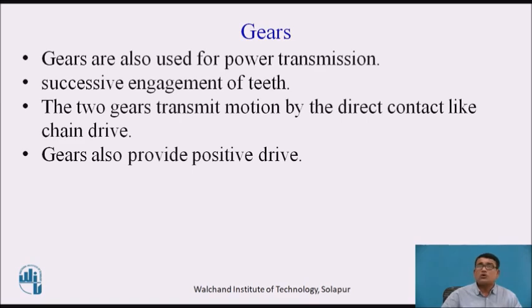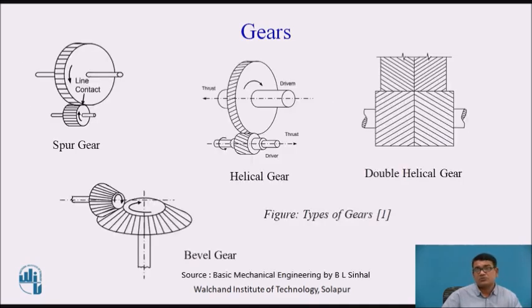So gear is a positive drive, and chain is also a positive drive. But when you compare belts, ropes, chains, and gears — gear is the 100% motion transmission system.